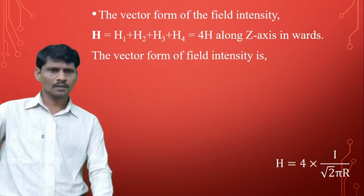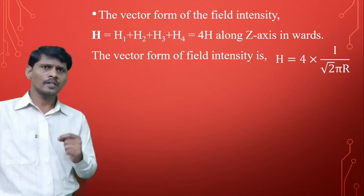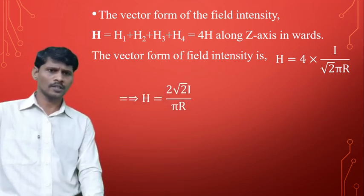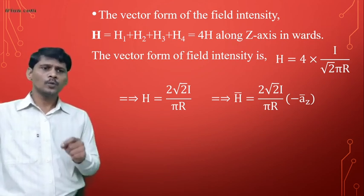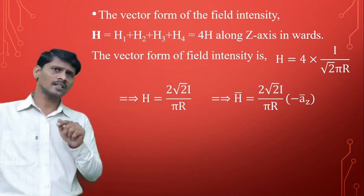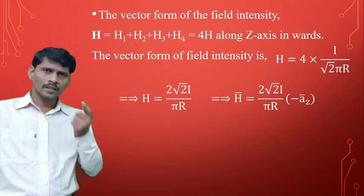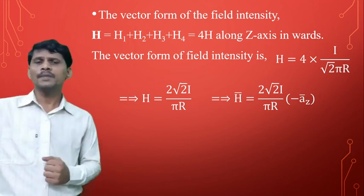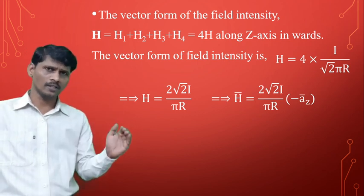Therefore, the total magnetic field intensity H̄ = 4 × H1, where H1 = I/(√2·π·R). So H = 4I/(√2·π·R) = 2√2·I/(π·R). In vector form, H̄ = (2√2·I)/(π·R) × (−âz), since the current-carrying conductor is arranged in the clockwise direction, giving n̂ = −âz.